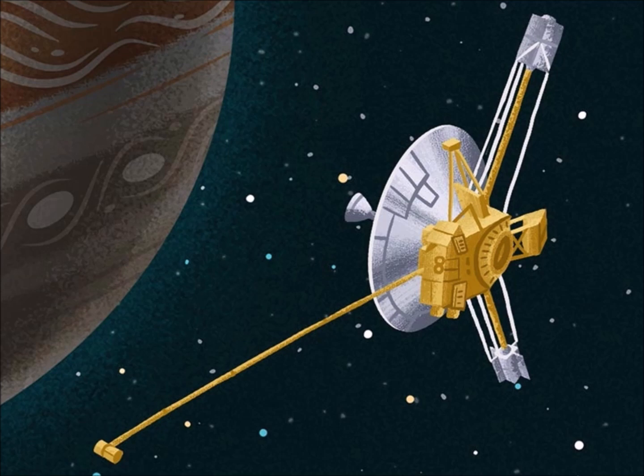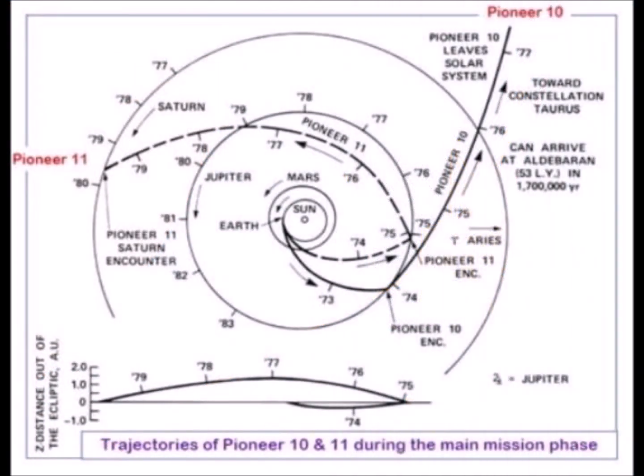Pioneer 11 was also deflected by Jupiter, but later. It describes its trajectory towards the center of the galaxy.